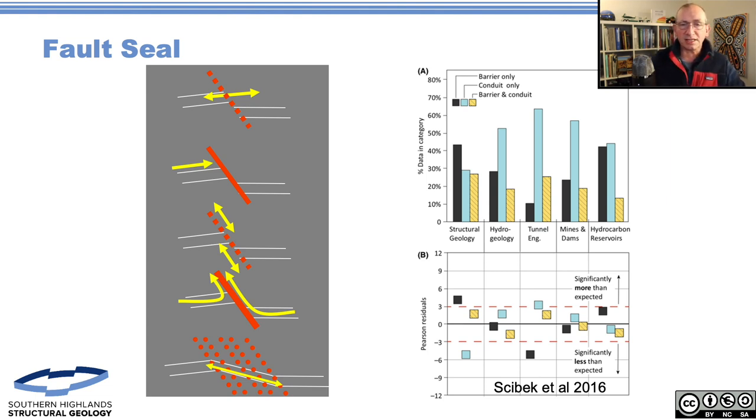When you look at tunneling, mines, and dams, for geotechnical work people are worried about faults leaking. There's a good reason - they're looking after health and safety. They're concerned about mining or tunnel boring into faults and water ingress into the workings. That's really different from an oil and gas company producing a prospect that looks attractive because it has a sealing fault.